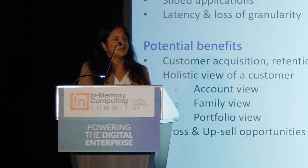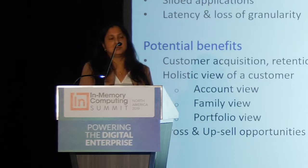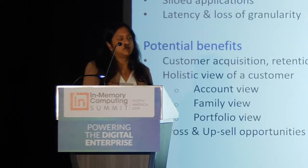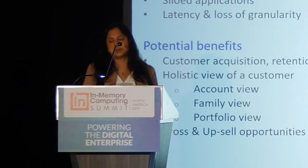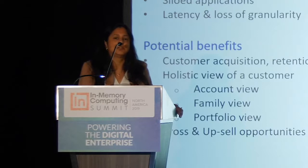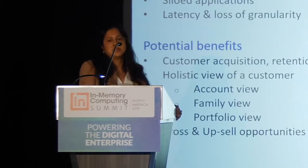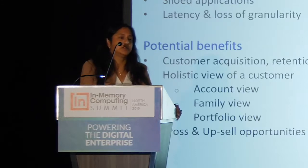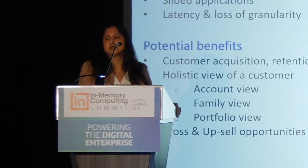One of the ways they can compete is to leverage the information they have across multiple lines of business about their consumers. For example, a bank may have information about core transactions, loans, mortgages, cards, small business ownership, or even investment services. Integrating that information and being more agile in how quickly they can offer services that pull it together across multiple lines of business can be a significant advantage.